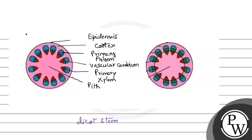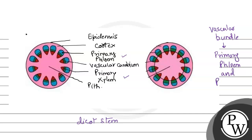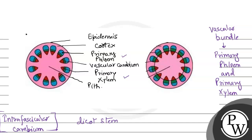Primary phloem and primary xylem together form the vascular bundles. So what is included in a vascular bundle? It includes primary phloem and primary xylem. Between primary phloem and primary xylem we can see the vascular cambium. This vascular cambium is of two types — the first type, present between primary phloem and primary xylem within the bundle, is called intrafascicular cambium. This is present within the vascular bundle.